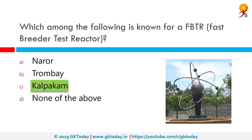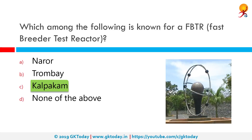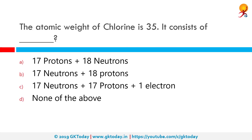The atomic weight of chlorine is 35. It consists of 17 protons and 18 neutrons. An atom is composed of protons, neutrons, and electrons. Electrons have negligible weight, so only the weight of the protons and neutrons is considered.